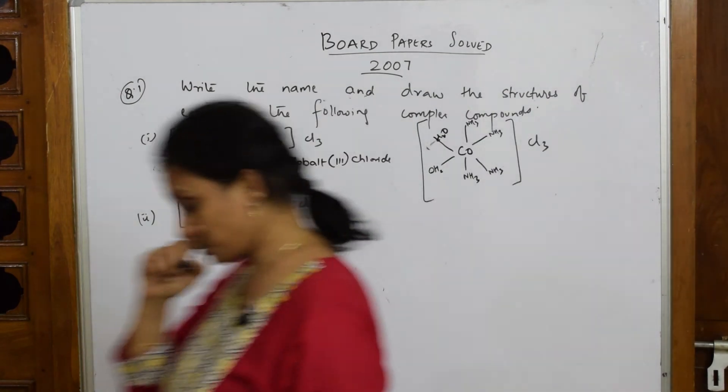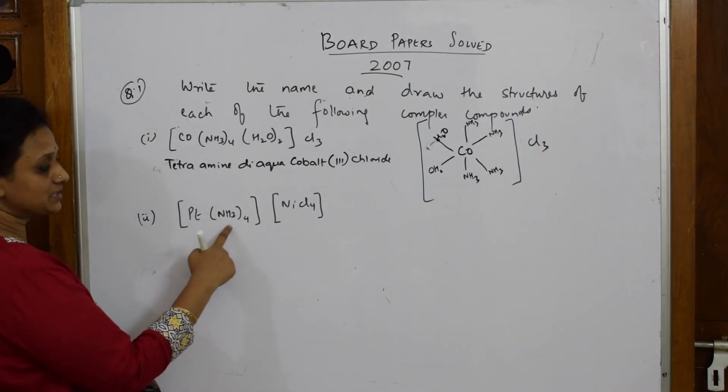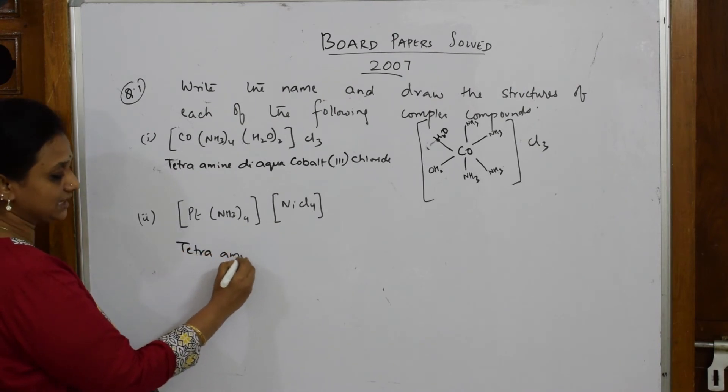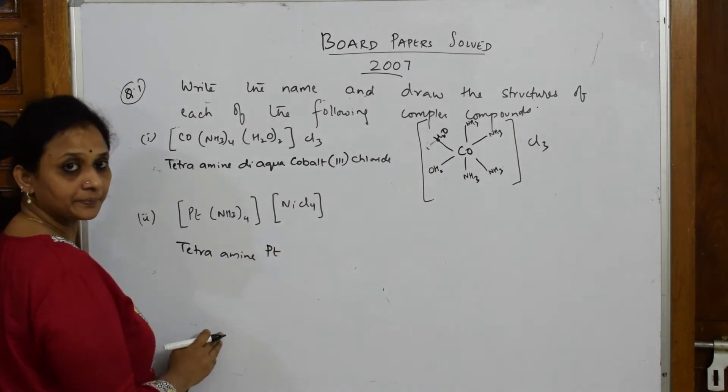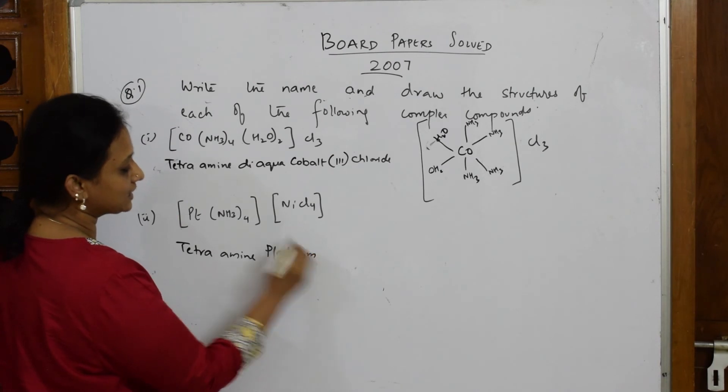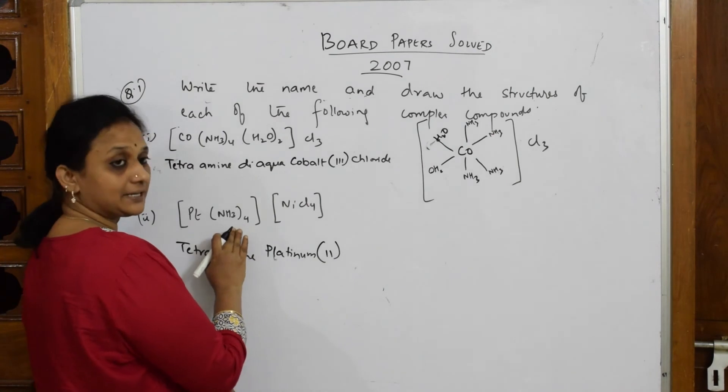Let us write this formula now. They want to first name it, starting from here. What is this? Tetra-amine, single M, platinum. Let us write the full form platinum. When I calculate this one, I get an oxidation state of 2, platinum. Tetra-amine platinum(2).